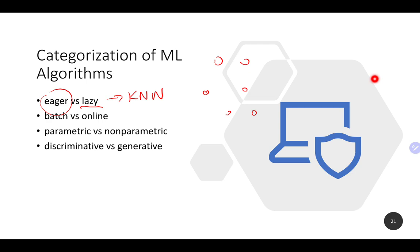Another learning type is batch versus online. Batch is basically: you collect the data and use it to train your model. Online learning is when new data points keep coming in continuously and the model tries to learn from them, then those data points are discarded. This is especially valid for very large data sources like Facebook, Twitter, and YouTube where there's lots of data coming in — you should be able to learn from new incoming data as it arrives.